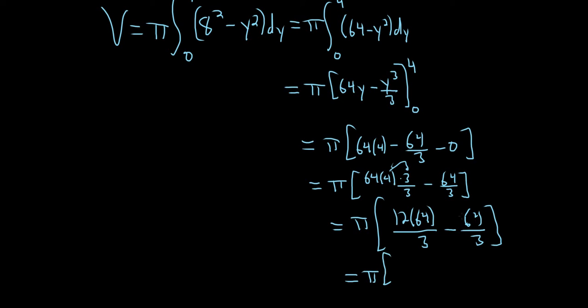So this is pi, 12 times 64 minus 1 times 64 is 11 times 64. I guess I could have just used a calculator. Let me just plug it into my calculator and see what this is. So 11 times 64 over 3 gives me a decimal, but I can turn it into a fraction. And it gives me 704 over 3. So this is 704 over 3 pi.